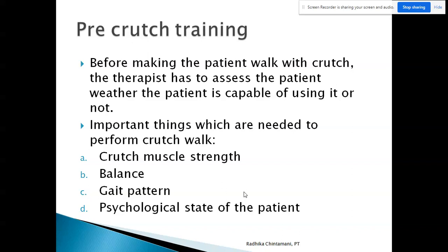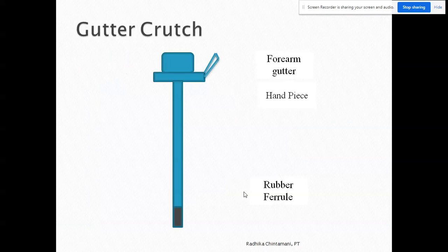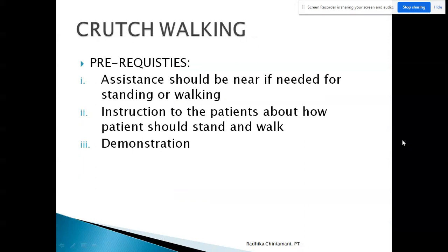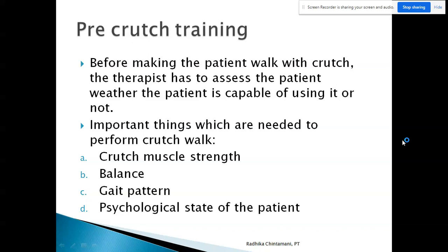Regarding balance: if a patient has a severe balance issue, giving the crutch is of no use — treat the balance first and then give the crutch. Although the crutch increases stability, the rubber ferrule's contact area with the ground is very small compared to the foot. It can increase the base of support by widening it, but it is still small. Good balance is very important before training a person in crutch walking.